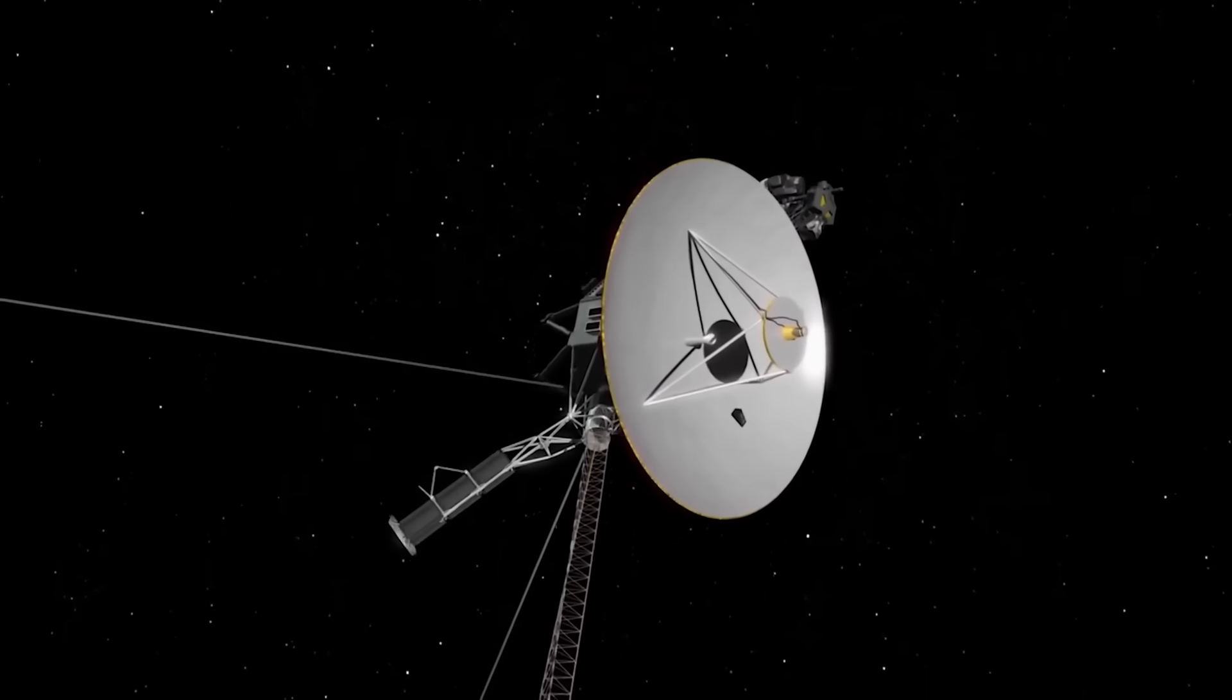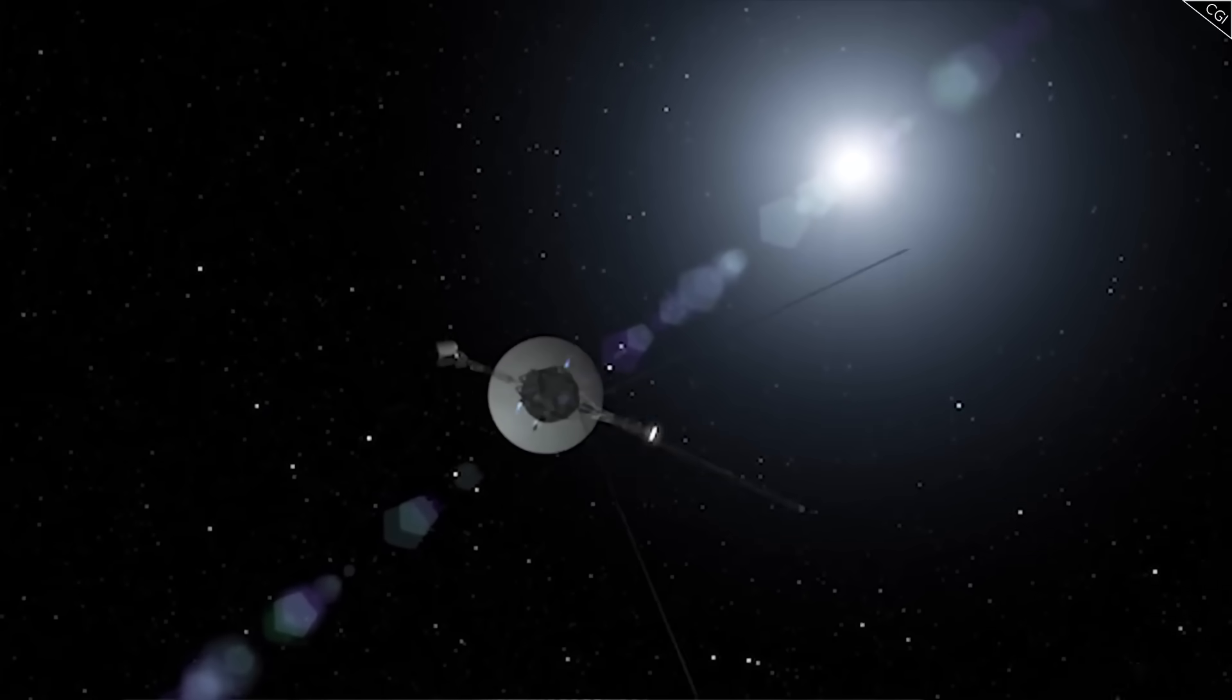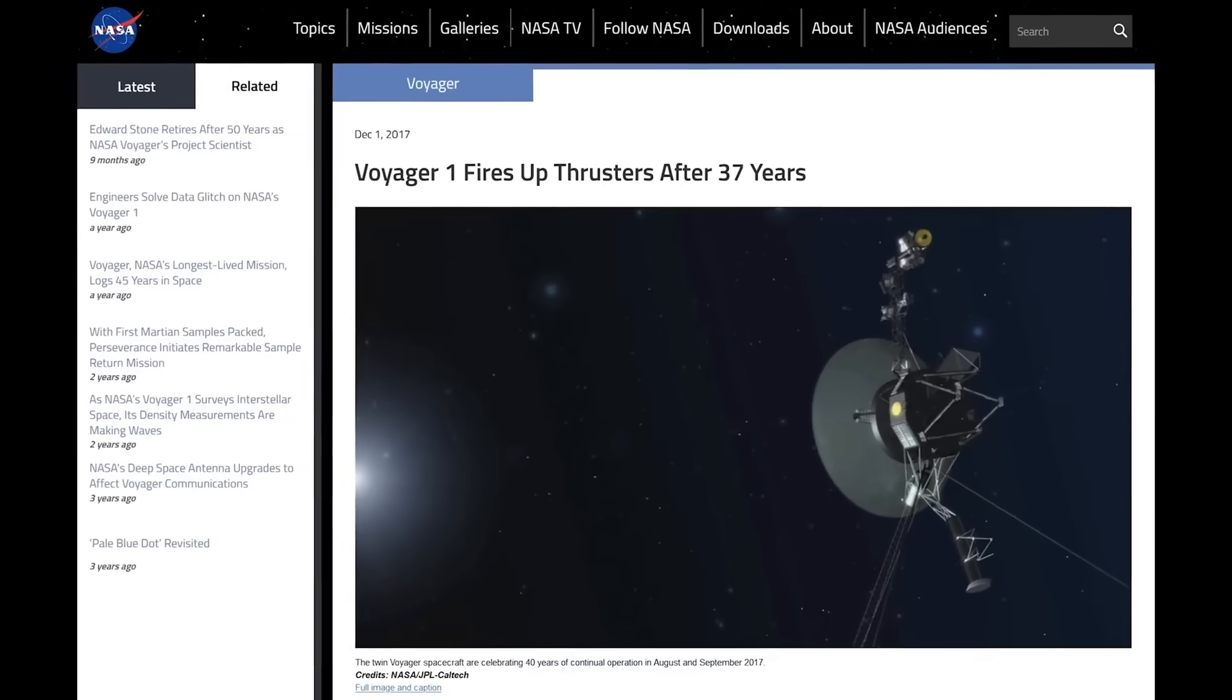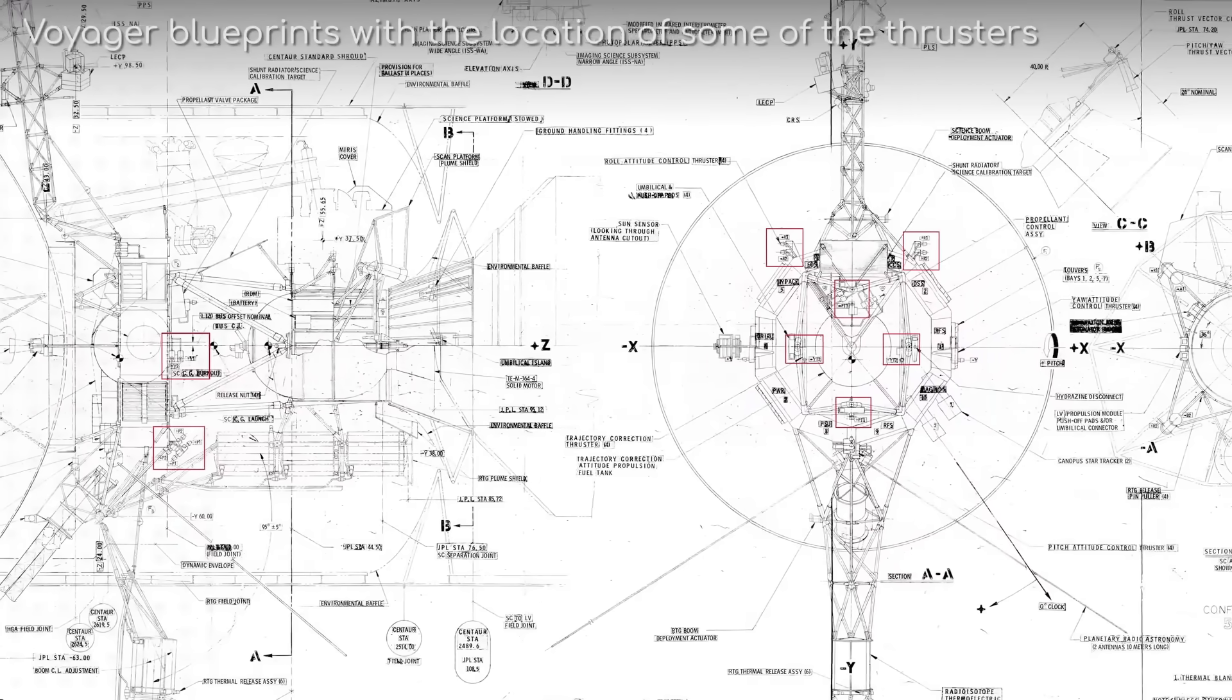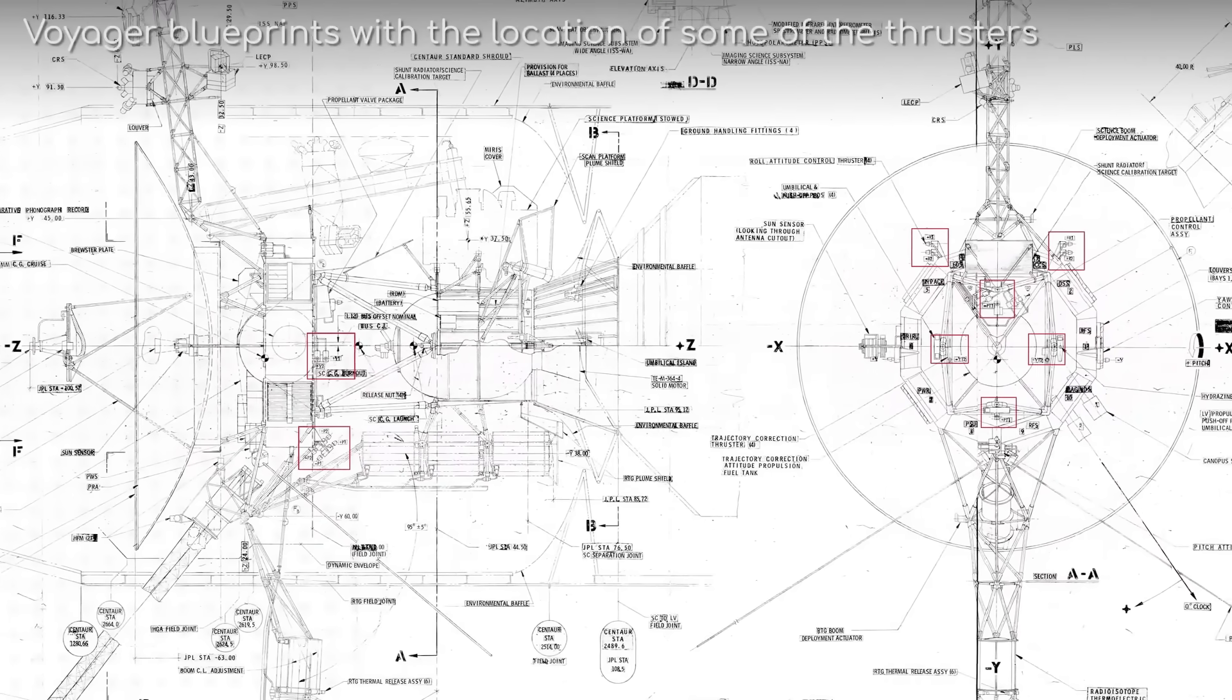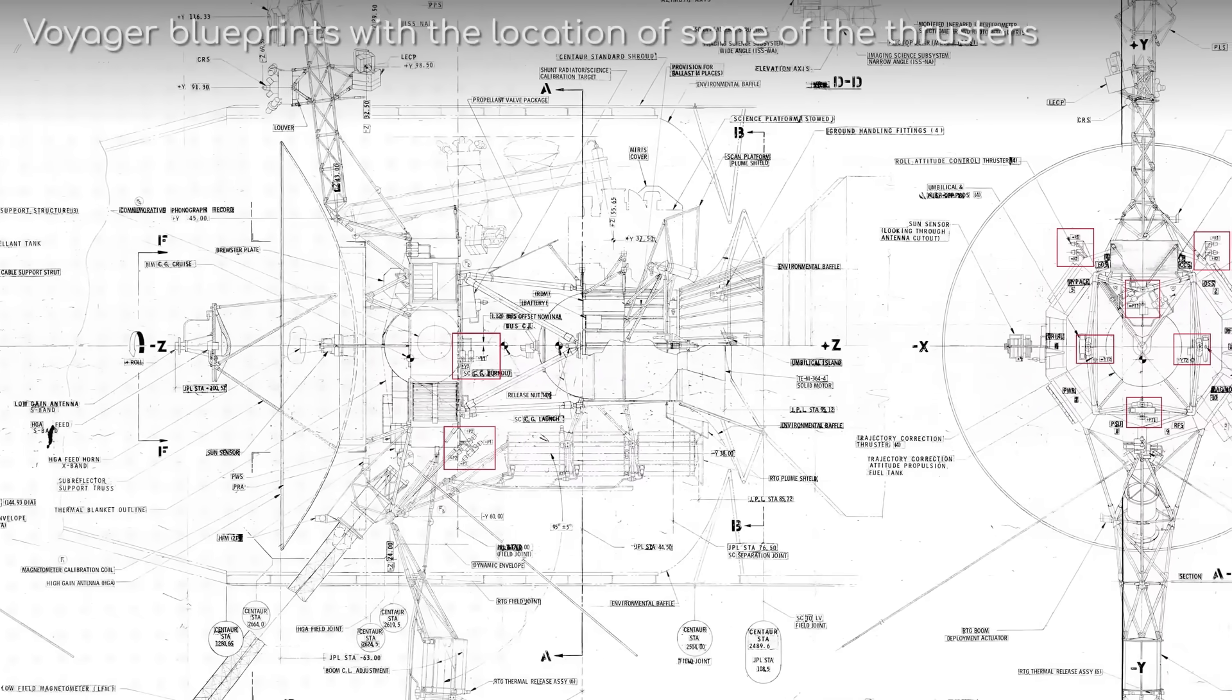This wasn't just good luck—it was brilliant, brutal engineering. Voyager 1 was built with triple redundancy systems. It has thrusters and backup thrusters, heaters and backup heaters. It carries a nuclear power source made from plutonium-238, which decays slowly enough to provide electrical power for decades. NASA engineers designed it to fail slowly, to keep going even when everything around it broke down.